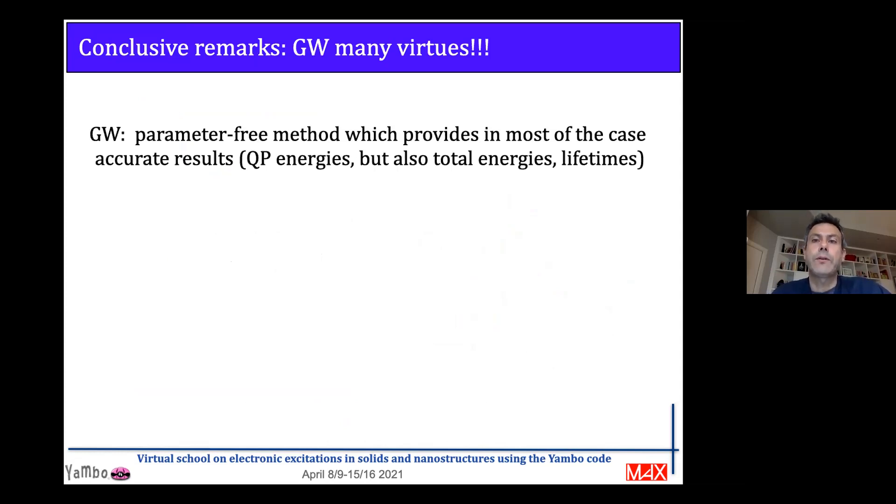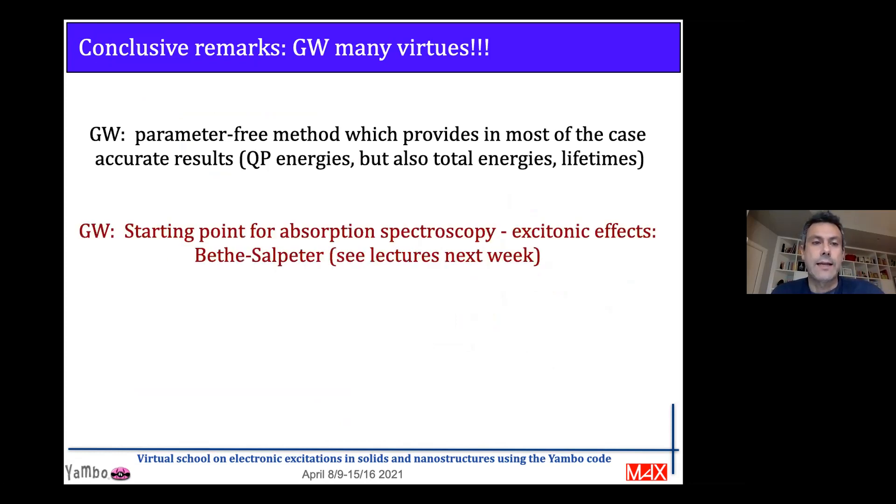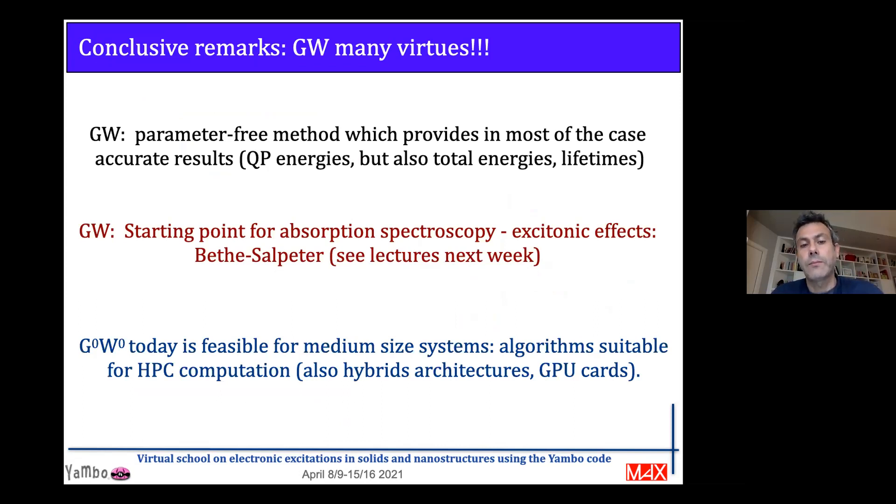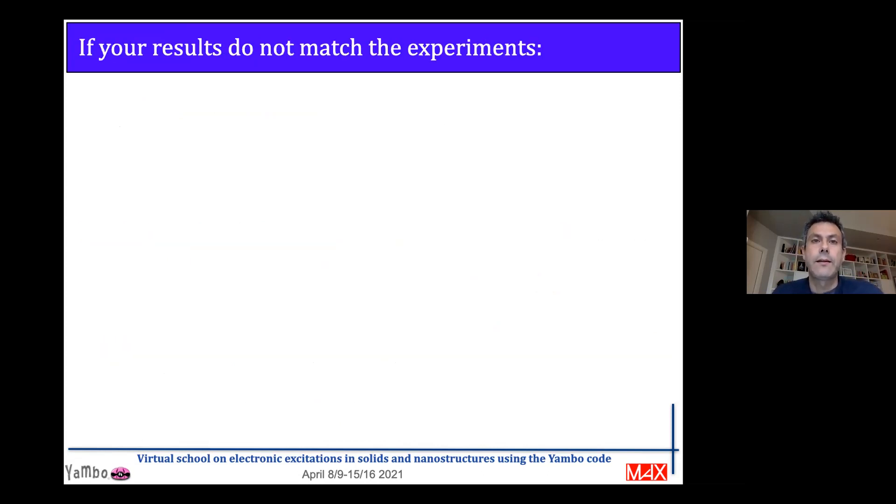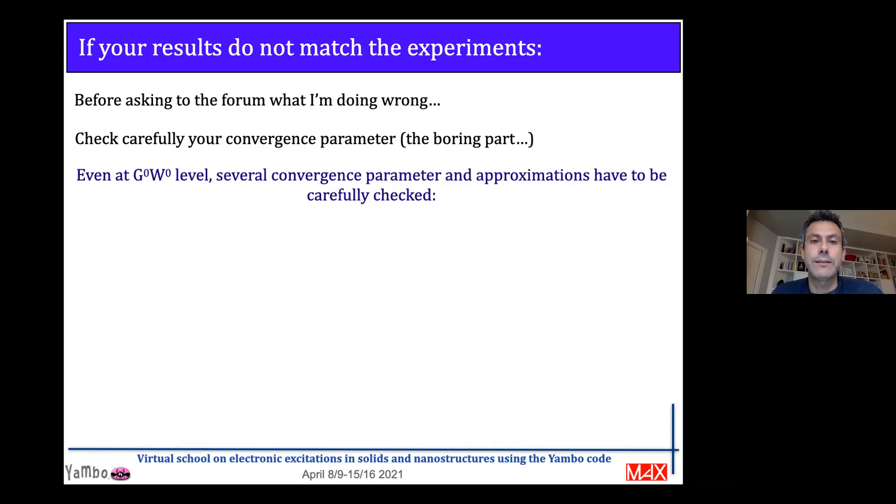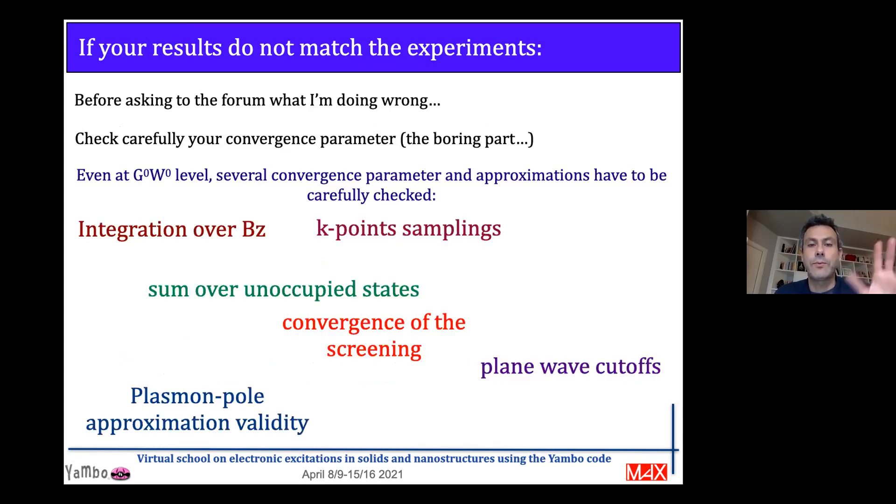Some conclusive remarks. Many virtues of the GW approximation: it's a parameter-free method that provides in most cases accurate results. It is the starting point also for calculation of spectroscopy, but other ingredients are needed. And today it is feasible for medium-sized systems. The algorithm is suitable for HPC computation, particularly for GPU cards. But if your results don't match the experiments, don't worry. Always care for your convergence parameters. It is very, very important, even at G0W0, which is the simplest approximation.